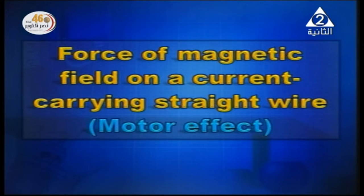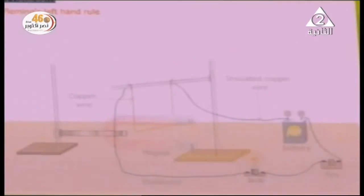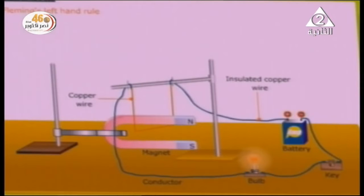The motor effect, or force of the magnetic field on a current-carrying straight wire, is an experiment in which energy is converted from electric energy into mechanical energy. When a current is passed through a wire and the wire is placed perpendicular to a magnetic field, the wire moves, because the wire will be acted upon by a force.